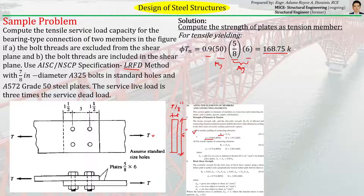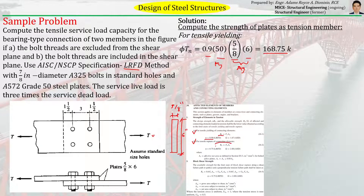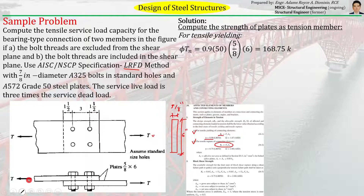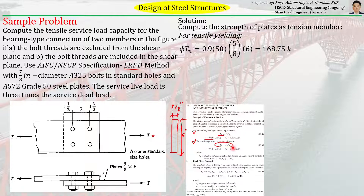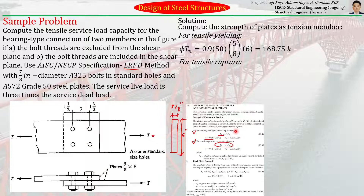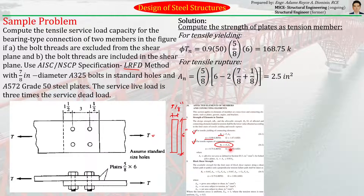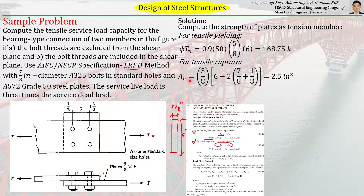We also check tensile rupture of the connected elements per AISC J4. The capacity is FU × AE, where AE = U × AN. We need to find the net area AN first. It is equal to the gross area minus the area occupied by the bolt holes. We compute the net width by subtracting the effective bolt hole diameter from the gross width of 6 inches.